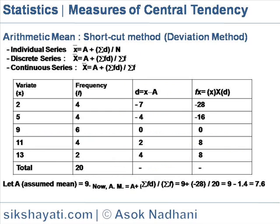Arithmetic mean, shortcut method, deviation method. Here, a value preferably from the middle is first assumed to be the value of the arithmetic average. Then, from the assumed average, the deviations from the different items of the series are found out. The average of such deviations are then added to the assumed average. The resultant figure comes out to the value of arithmetic average.